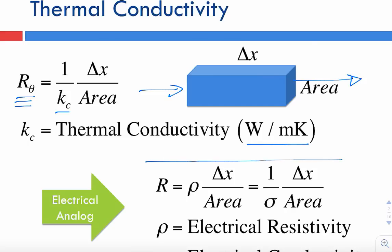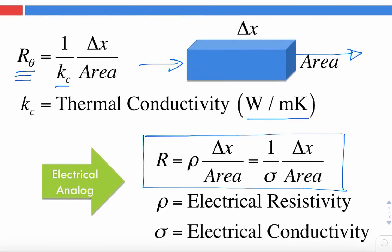This is the electrical analog of the thermal resistance equation, and you can see that both equations have exactly the same form. In the electrical case, resistance equals rho — the reciprocal of conductivity — but in the electrical world this is more frequently given in resistivity instead of conductivity. That's the only difference; the rest is exactly the same: delta x over area. So 1 over electrical conductivity can also be used.